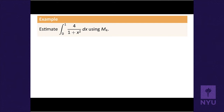Here's an example of estimating an integral using a Riemann sum. Let's look at the function 4 over (1 + x²) integrated from 0 to 1. We won't integrate it exactly, but we'll estimate it using M4 — the midpoint rule with four divisions.